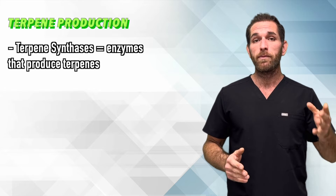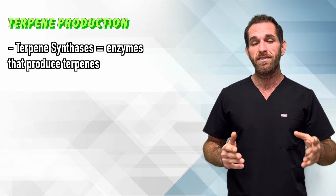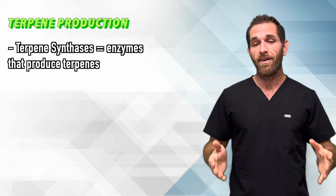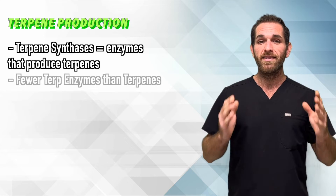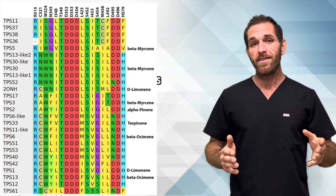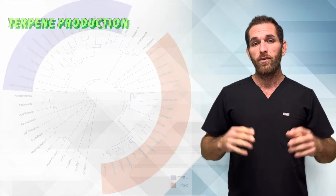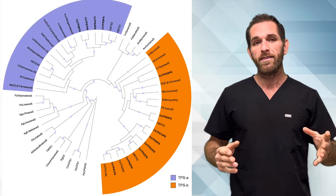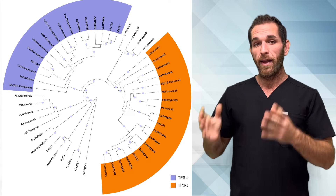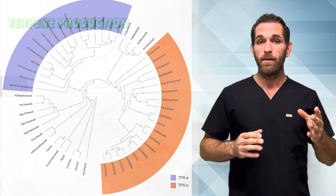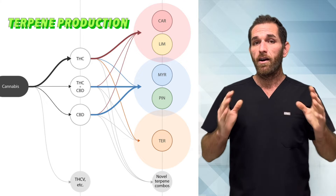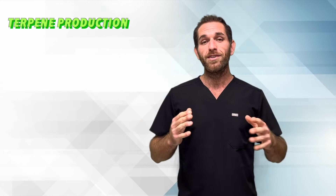From here, enzymes called terpene synthases use GPP and FPP as substrates to catalyze the remaining terpene reactions. Although more than 150 terpenes have been identified in cannabis so far, only a handful of monoterpene synthases and sesquiterpene synthases have been identified. If we take a look at this graphic, terpene enzymes have classically been grouped into clusters. The enzymes we really care about are mainly in cluster B and some in cluster A. These gene clusters are actually shared amongst older, similar plant species.